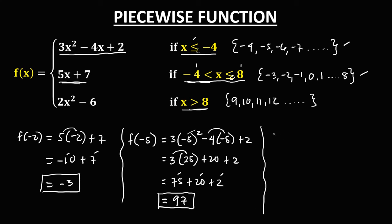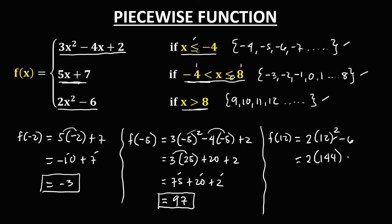For f(12): since positive 12 belongs to this set of numbers, we are going to use this equation to solve for f(12). We have 2 times 12 to the power of 2, then minus 6. Simplifying: 2 times 12 squared, which is 144, then minus 6. So 2 times 144 equals 288, minus 6, and therefore f(12) is equal to positive 282.